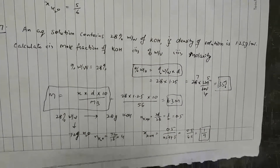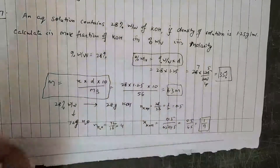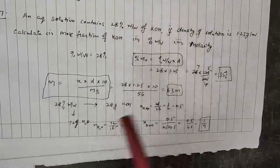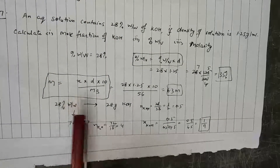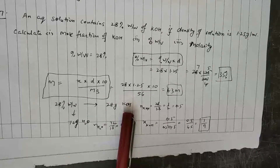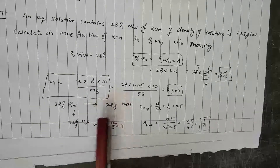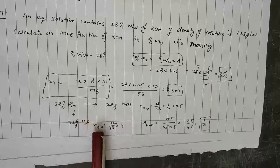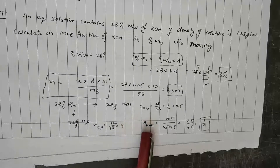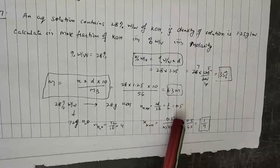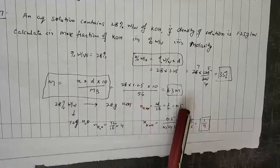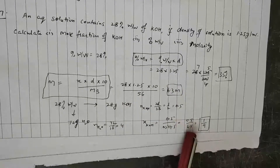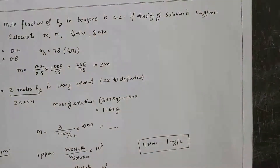Now to calculate the mole fraction of KOH: 28% w/w means 28 g KOH and 72 g water. Number of moles of KOH = 28/56 = 0.5; number of moles of water = 72/18 = 4. Mole fraction of KOH = 0.5 / (0.5 + 4) = 0.5 / 4.5 = 1/9.